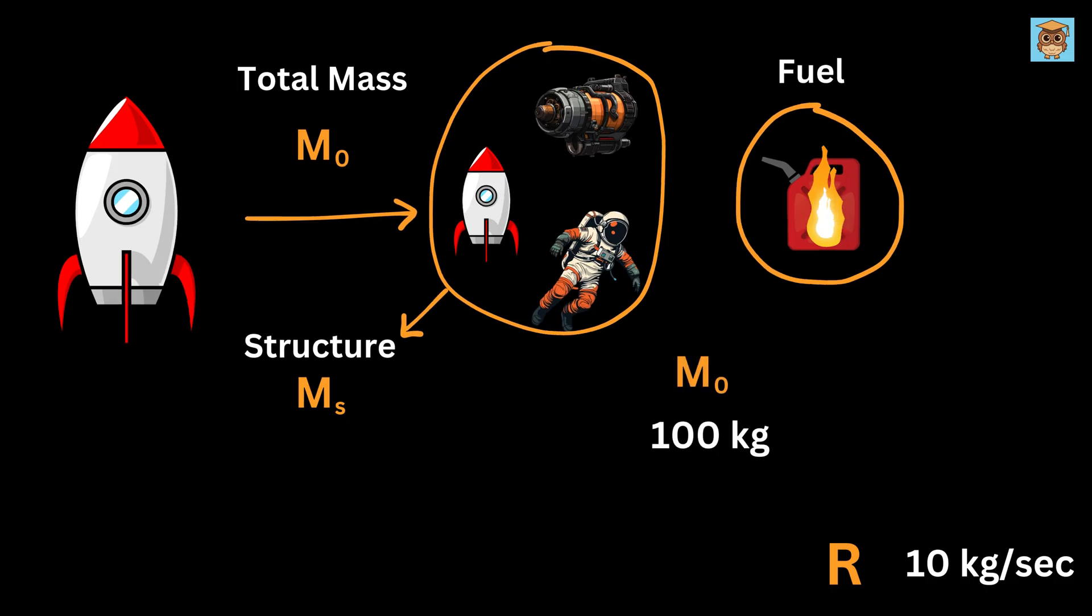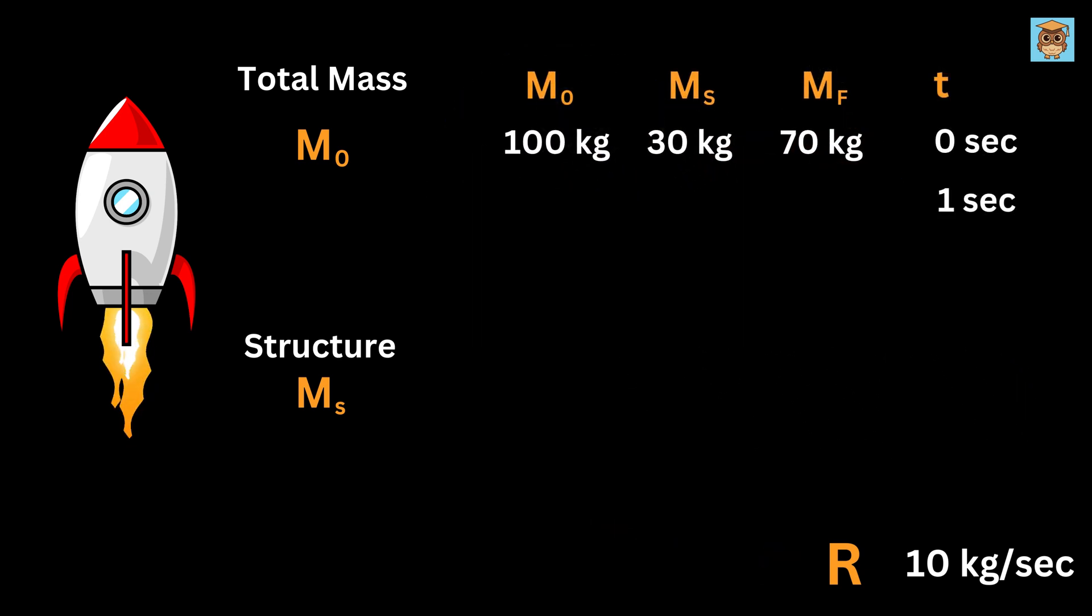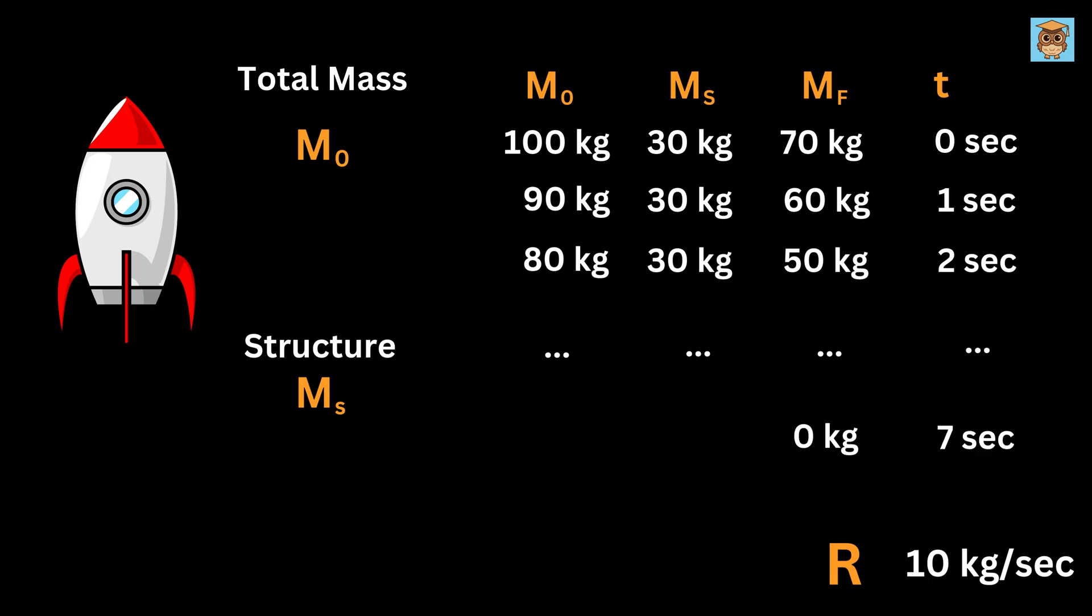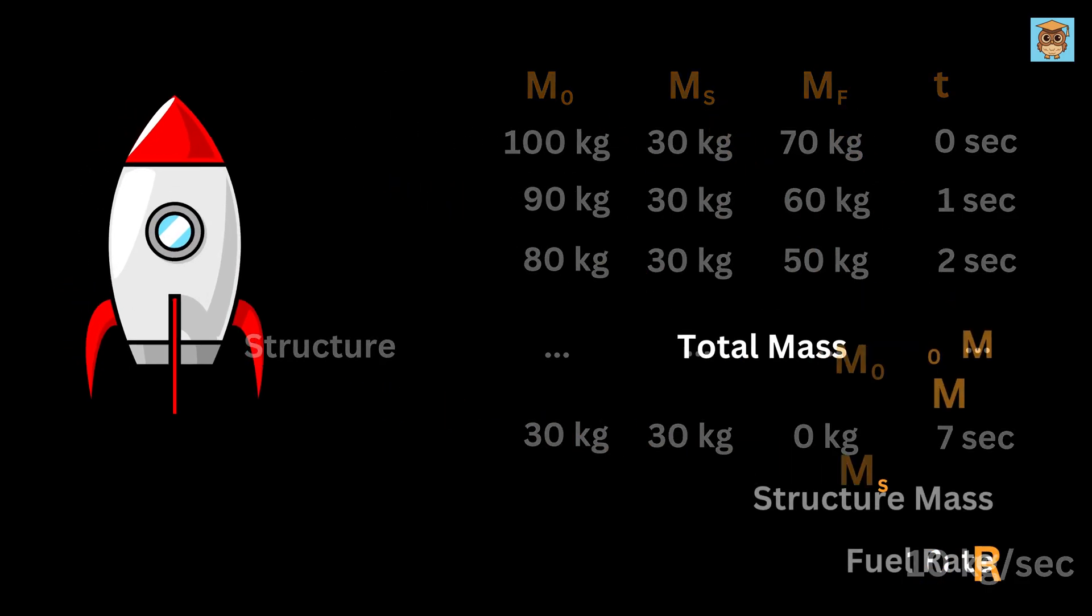If M0 is 100 kilograms and Ms is 30 kilograms, then the fuel starts at 70 kilograms. As the rocket flies, assume it burns fuel at r equals 10 kilograms per second. After one second, it has burned 10 kilograms, so the fuel left is 60 kilograms and the total mass is now 90 kilograms. After two seconds, it's down to 50 kilograms of fuel and the total mass is 80 kilograms. This keeps going until the fuel hits zero and the mass is just Ms.